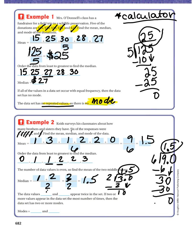The data values 1 and 2 appear twice in the set. If two or more values appear in the data set the most number of times, then the data set has two or more modes. So the modes here are 1 and 2.